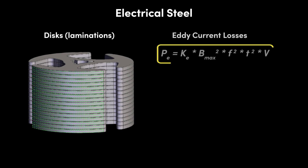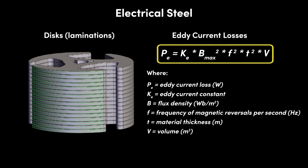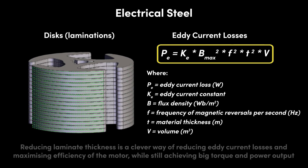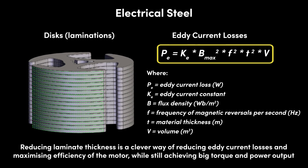The silicon addition to iron increases electrical resistivity while having minimal effect on magnetic permeability. Segmenting the stator core into thin laminations, which are electrically isolated from each other by the insulating coating, reduces eddy current losses further. Current is still induced in each lamination, but these are small currents, whereas in a single monolithic block, currents are free to generate over a much larger area and so are much larger. Eddy current losses can be minimized by reducing magnetic flux density, reducing the frequency of magnetic reversals, reducing the lamination thickness, or reducing the overall volume of material. Reducing lamination thickness is a clever way of reducing eddy current losses and maximizing efficiency while still achieving big torque and big power.